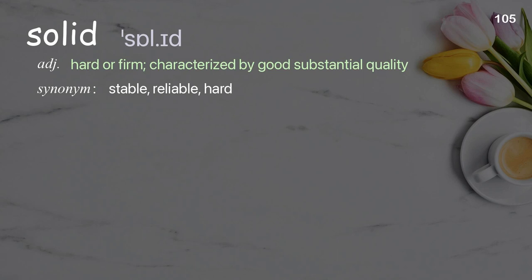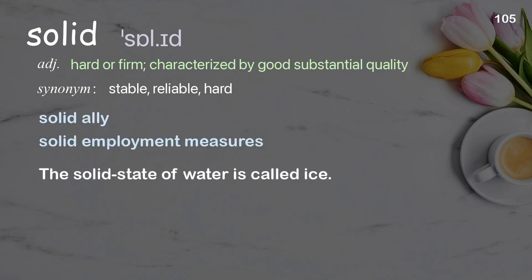Solid: Hard or firm; characterized by good substantial quality. Examples: Solid ally. Solid employment measures. The solid state of water is called ice.